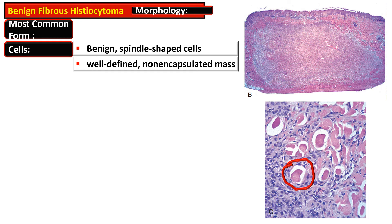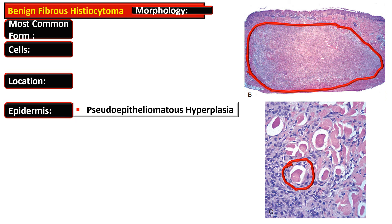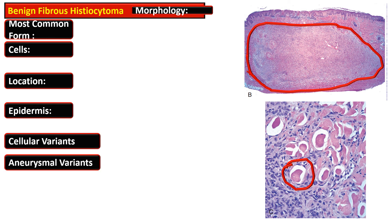Dermatofibroma, the most common variety of benign fibrous histiocytoma, is composed of benign spindle-shaped cells. The cell population is present as a well-defined, non-encapsulated mass in the mid-dermis, sometimes extending to the subcutaneous fat. The overlying epidermis shows pseudoepitheliomatous hyperplasia, characterized by downward elongation of hyperpigmented rete ridges. Many histologic variants have been described.